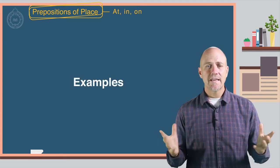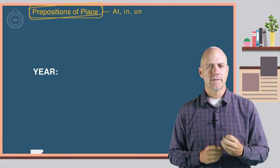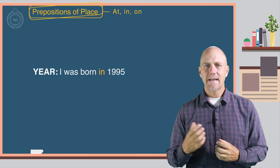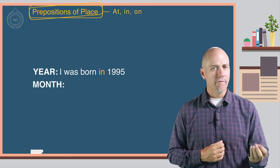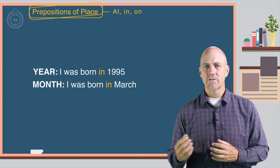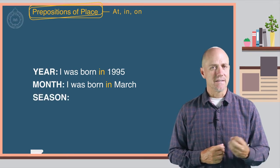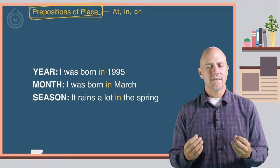Here are some examples. Year: I was born in 1995. Month: I was born in March. Season: It rains a lot in the spring.